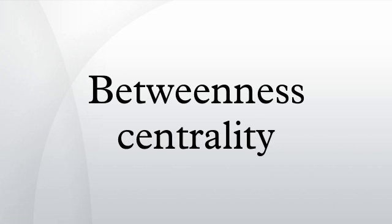The division is done by (N-1)(N-2) for directed graphs and (N-1)(N-2)/2 for undirected graphs, where N is the number of nodes in the giant component. Note that this scales for the highest possible value, where one node is crossed by every single shortest path.